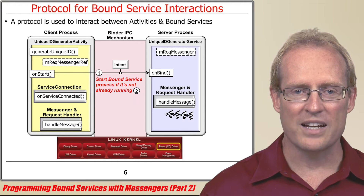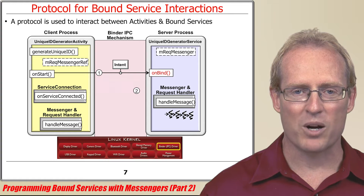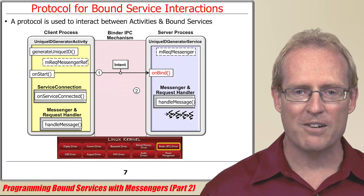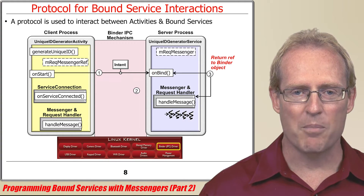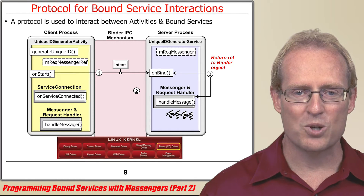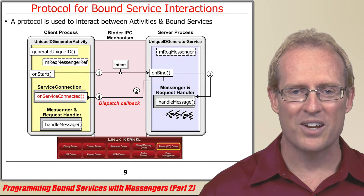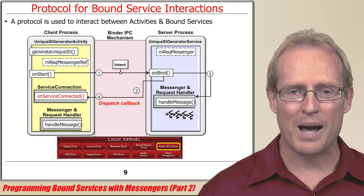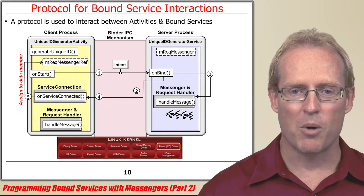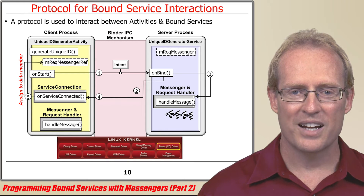This method starts the unique ID generator service if it's not already running. Android's service framework then invokes the onBind factory method, which returns the iBinder associated with the messenger that encapsulates the request handler. The service framework then dispatches the onServiceConnected hook method on the service connection object in the activity, which encapsulates the iBinder returned from onBind in a messenger and assigns it to a data member in the activity.